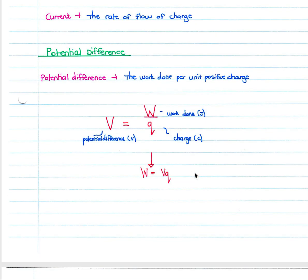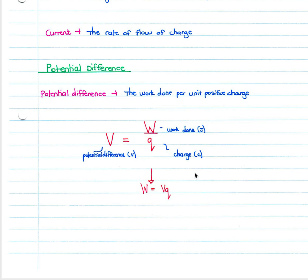Potential difference is the work done per unit positive charge. V equals W over Q, where V is potential difference in volts, W is work done in joules, and Q is charge in coulombs. This can be rearranged so that work equals potential difference times charge. Always ensure you're using the right units before doing calculations.